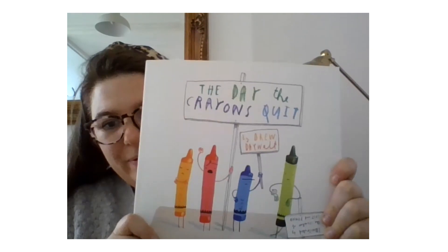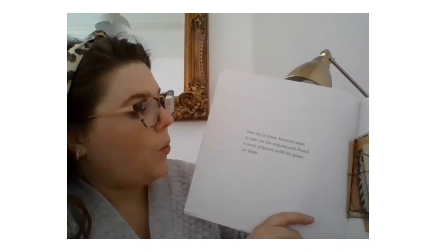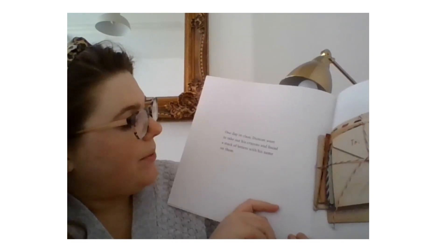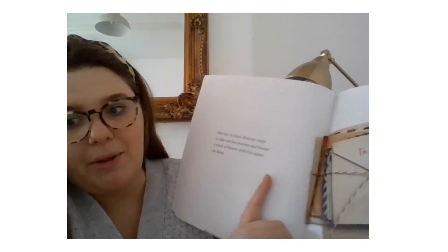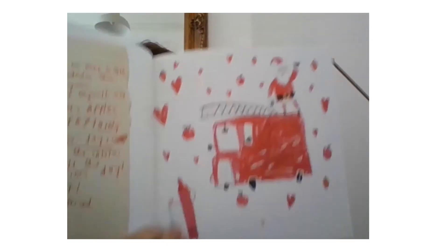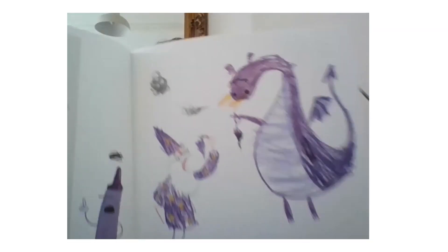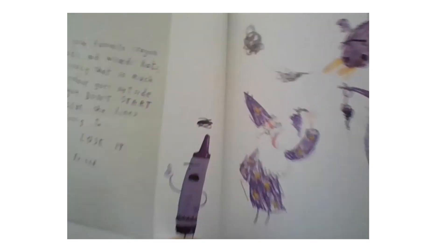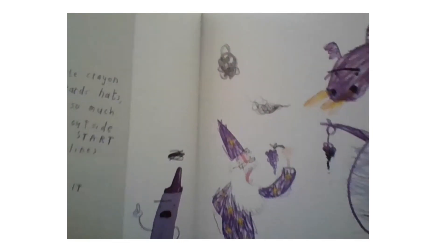Time for us to look at our book of the day - The Day the Crayons Quit. One day in class, Duncan went to take out his crayons and found a stack of letters with his name on them. The first letter was from the red crayon - we read that one yesterday. The next letter is from the purple crayon, so let's see what the purple crayon has to say.